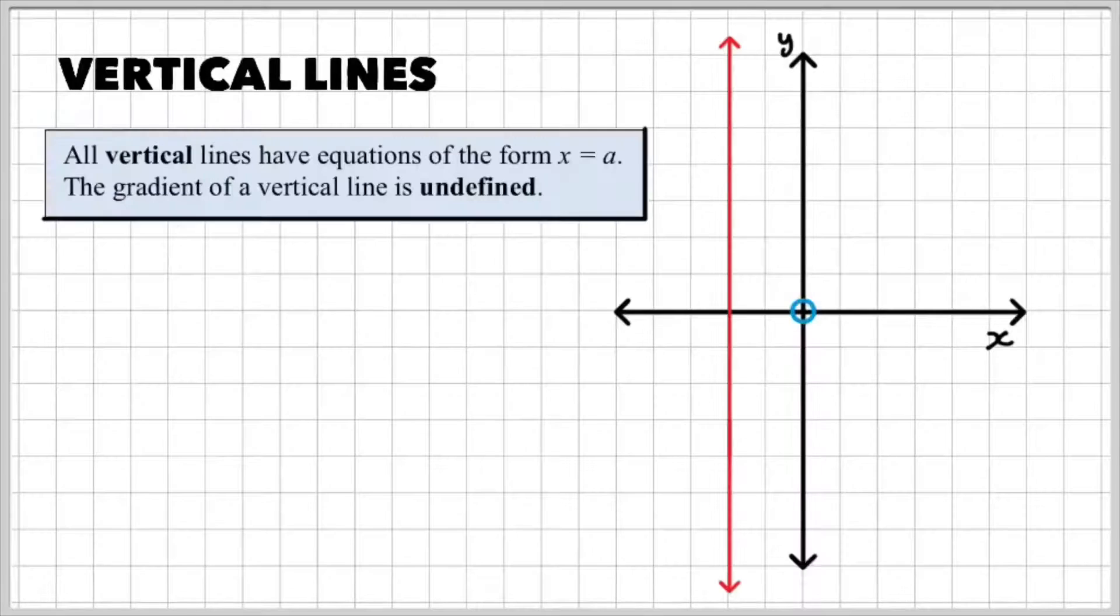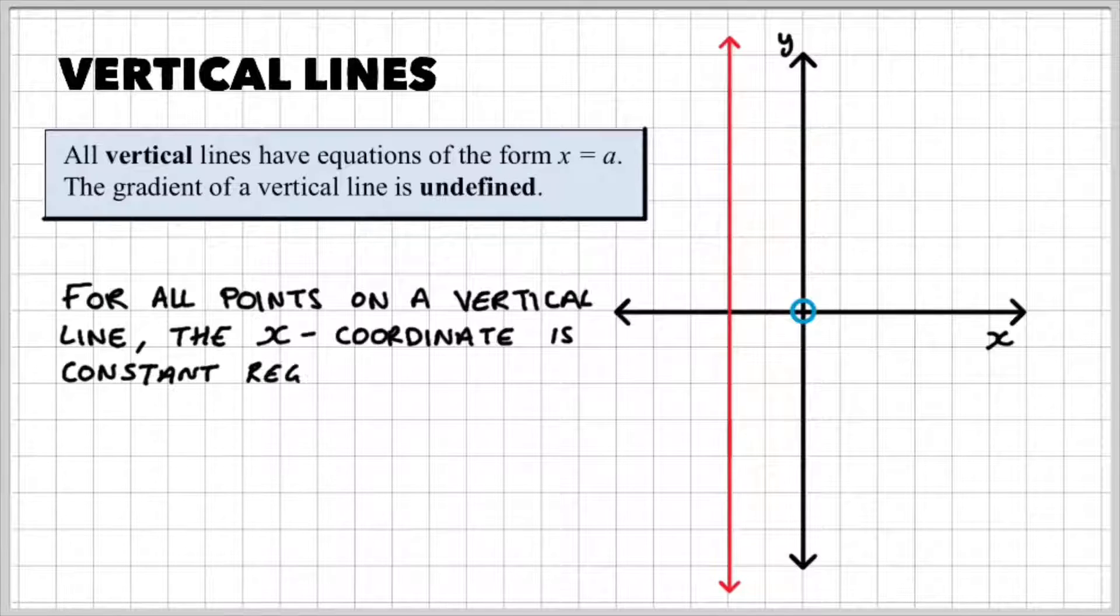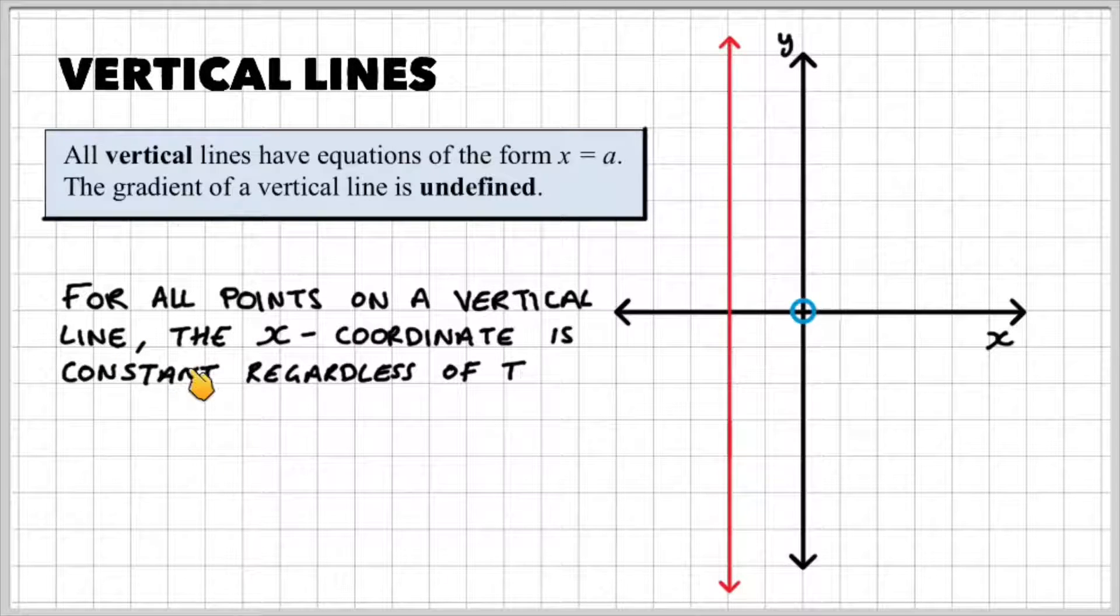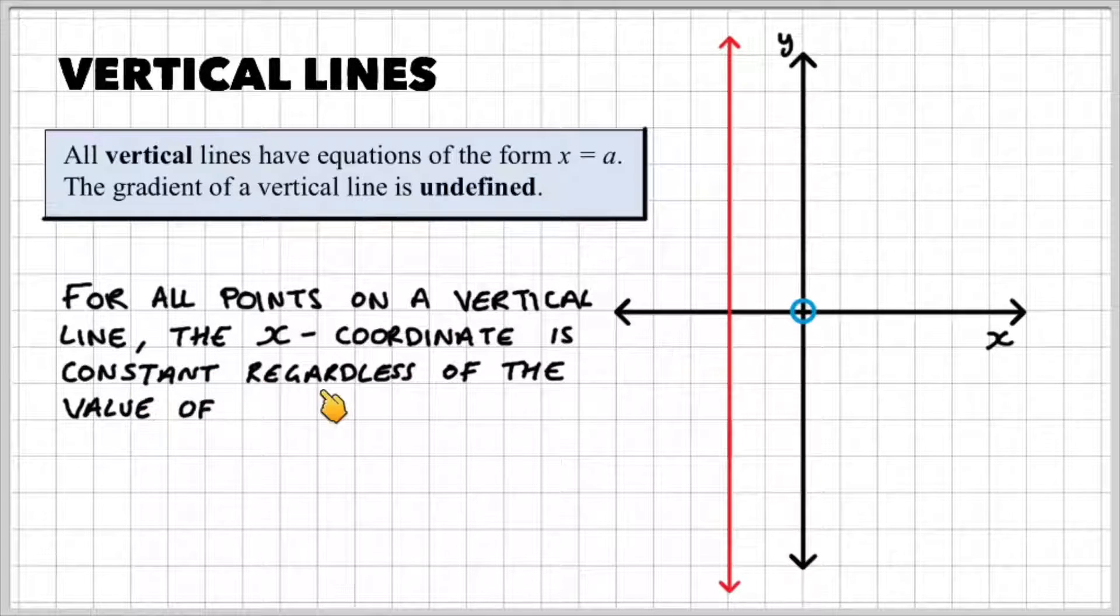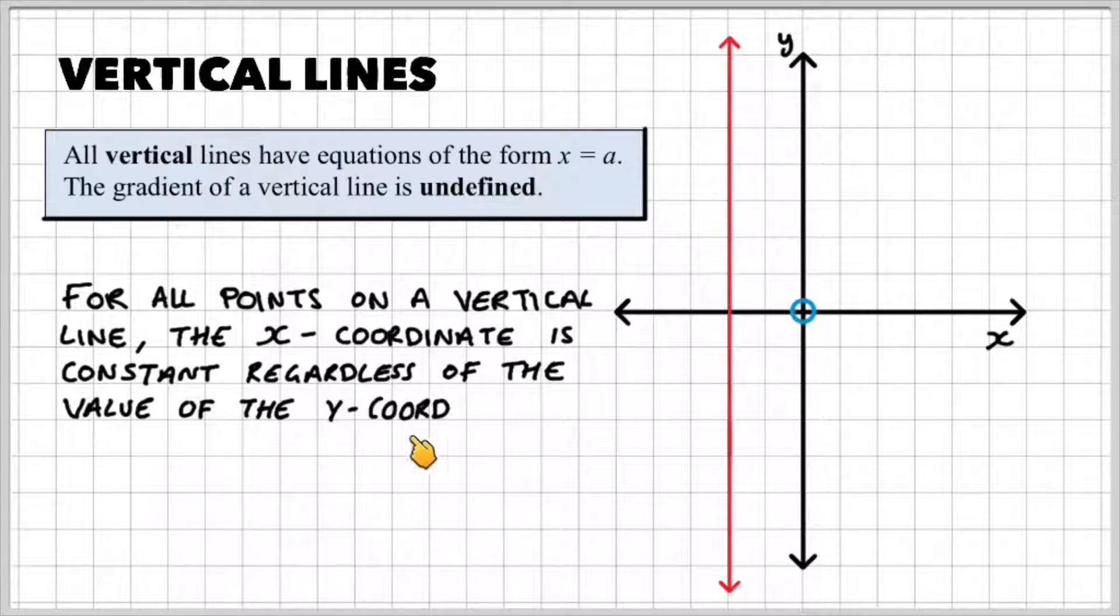So let's start off by talking about vertical lines. If you look on the grid, this red line here represents a vertical line. All vertical lines have equations of the form x equals a. The gradient of a vertical line is undefined. For all points on a vertical line, the x-coordinate is constant regardless of the value of the y-coordinate.